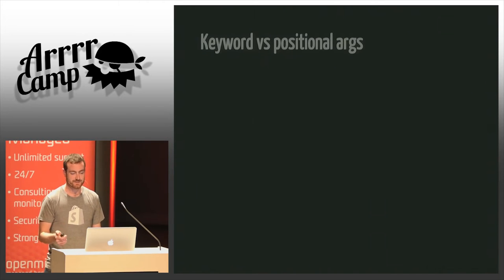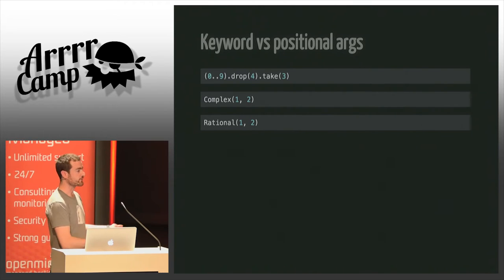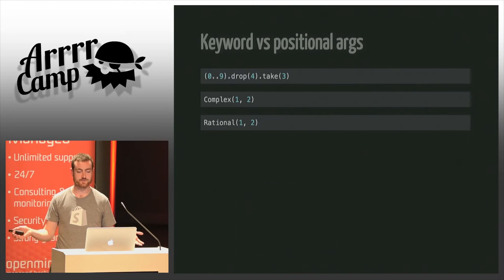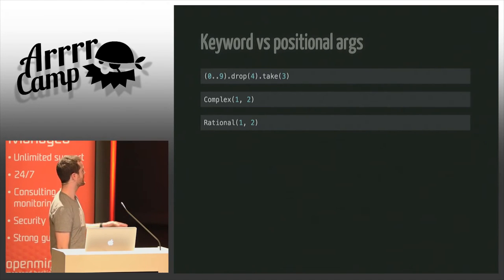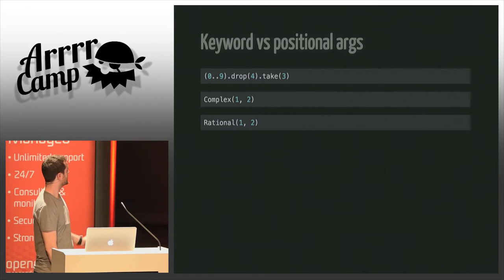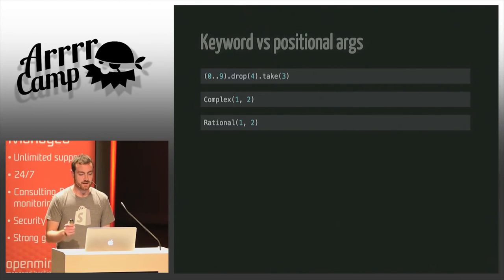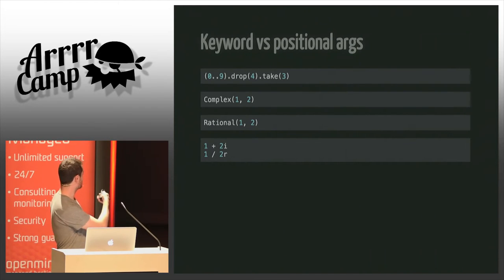At this point we might think: let's go ahead and use keyword arguments everywhere — but obviously there's always a trade-off. If you have a method that only takes one or two parameters but they're obvious, it's not going to help and it's going to make your code more verbose. For example, complex numbers are always the real part then the imaginary part; rational is always the quotient over the denominator — we don't really need to name them.